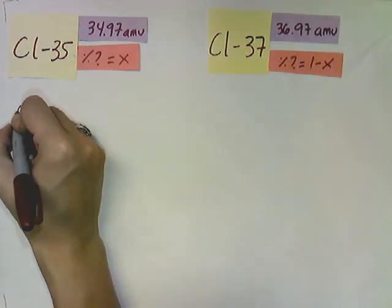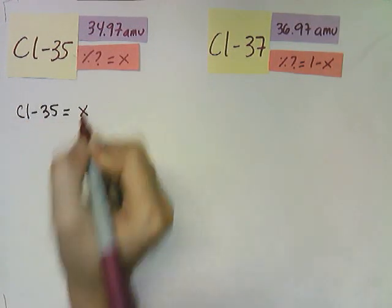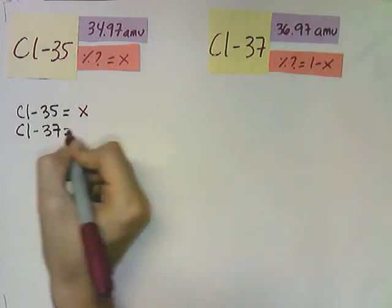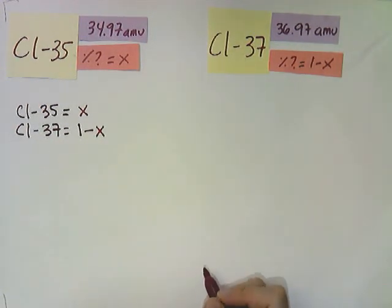So the rest of the percentage will be here. Now, for chlorine-35, I have x percentage. And for chlorine-37, I have 1 minus x percentage. So this is what I'm going to start with.